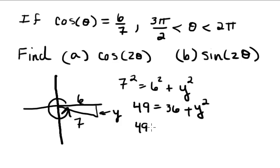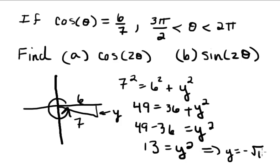And 49 minus 36 is equal to y squared. So I have 13 is y squared. And this tells me that y is plus or minus the square root of 13. And since I'm in the fourth quadrant, I know my y is negative.